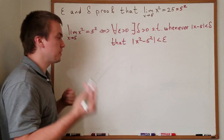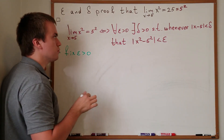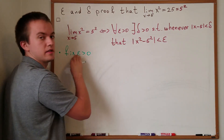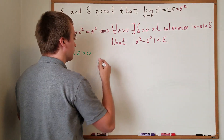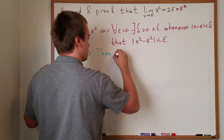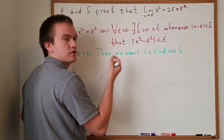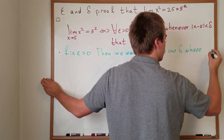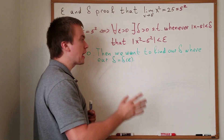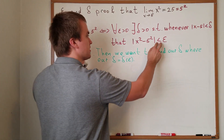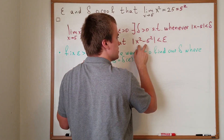So let's fix some epsilon greater than zero — in other words, we're choosing any epsilon greater than zero. Then we want to find our delta, where delta is a function in terms of epsilon. We have any epsilon given, and we want to find such a delta, so we assume the hypothesis is true first.